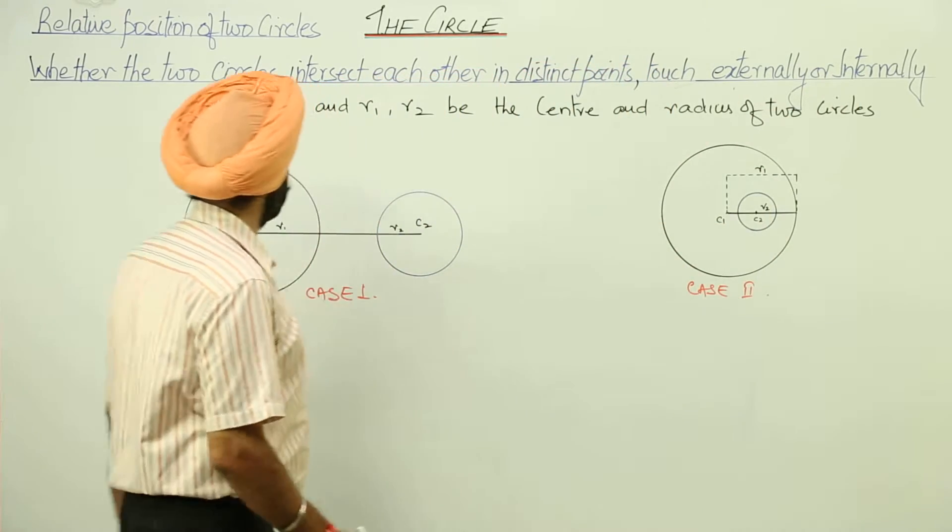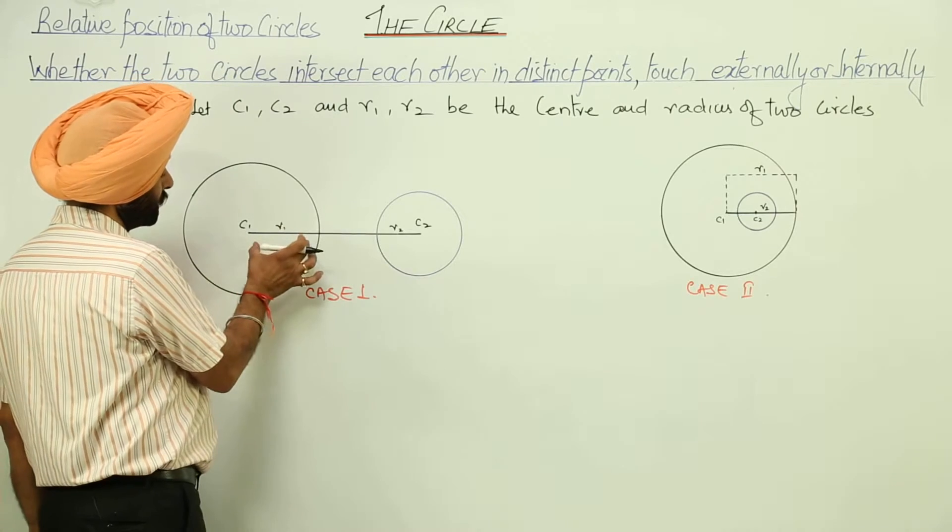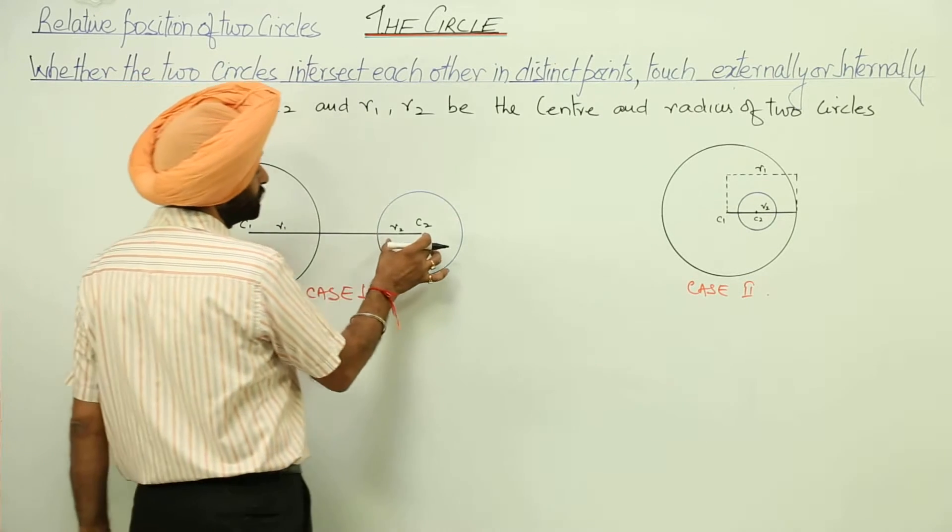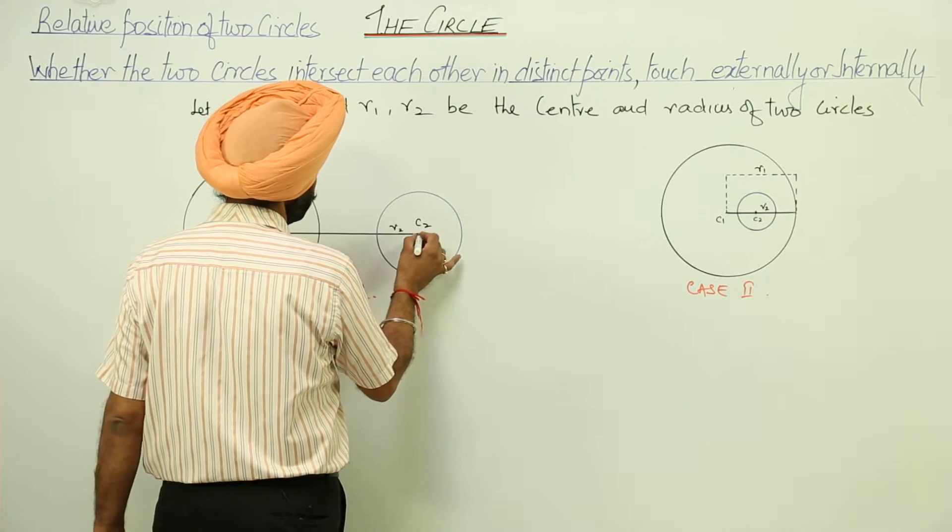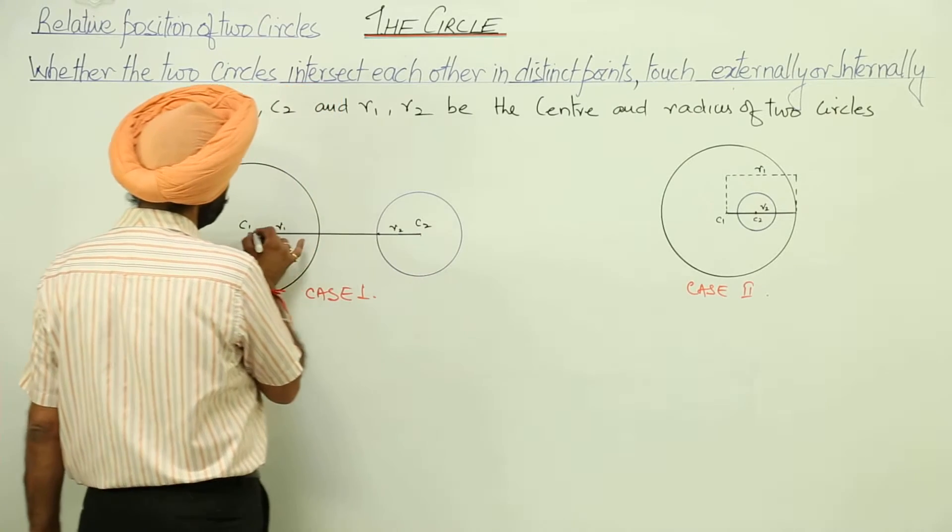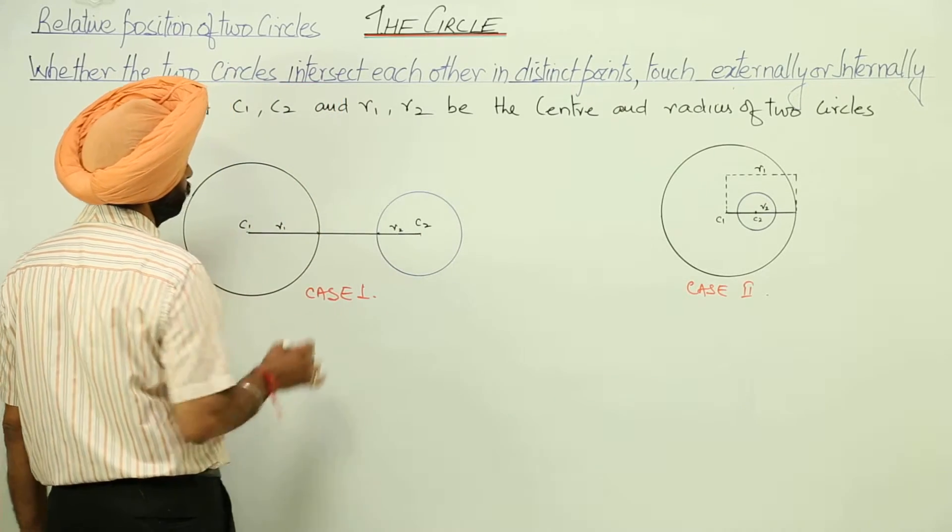We have already mentioned c1, c2 and this distance is r1, this distance is r2. From here to here it is r2, from here to here it is r1.